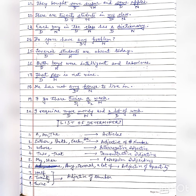Now, all the determiners used have been listed and classified. First: 'a,' 'an,' and 'the' — these are articles. Second: 'either,' 'both,' 'each,' and 'all' — these are adjectives of number. Third: 'whose,' 'which,' and 'what' — these are interrogative adjectives. Fourth: 'this' and 'that' — these are demonstrative adjectives. Fifth: 'my' and 'her' — these are possessive adjectives. Sixth: 'any,' 'several,' and 'a lot of' — these are adjectives of quantity. Seventh: 'half,' '20,' and 'twice' — these are adjectives of number. Can you now see what parts of speech determiners are made of?